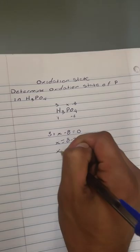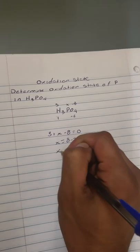And x is going to be 5. So the oxidation number of P for this compound is going to equal 5.